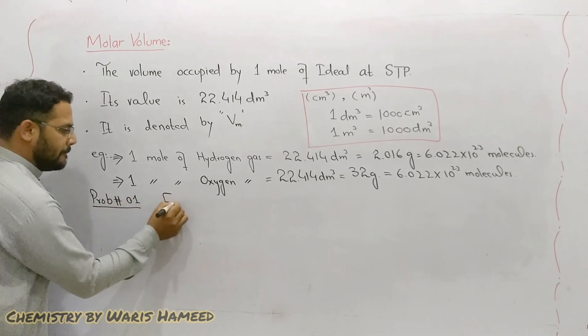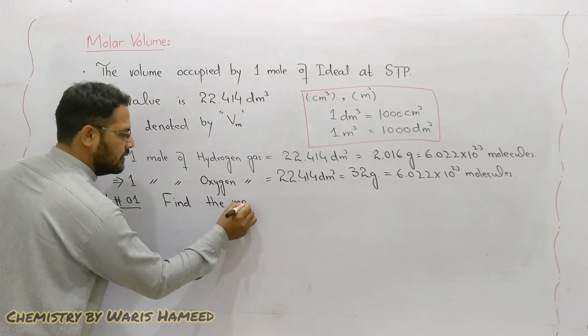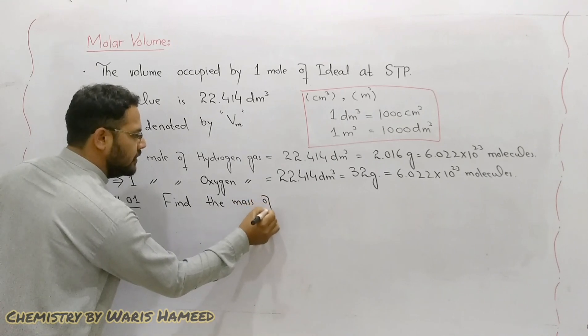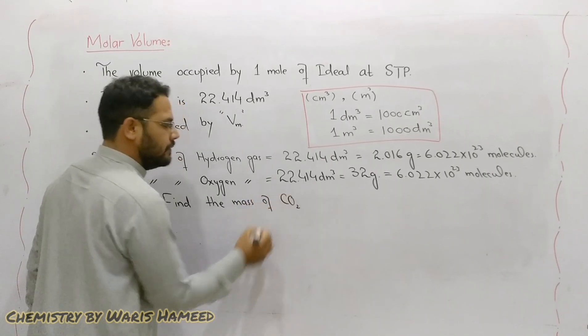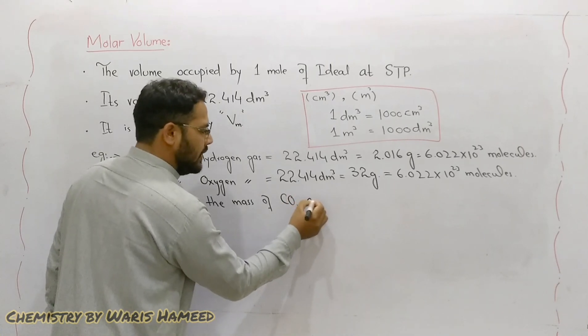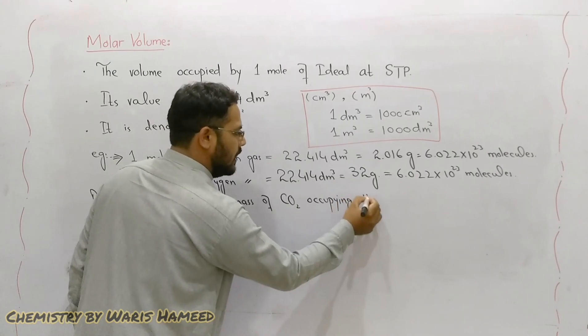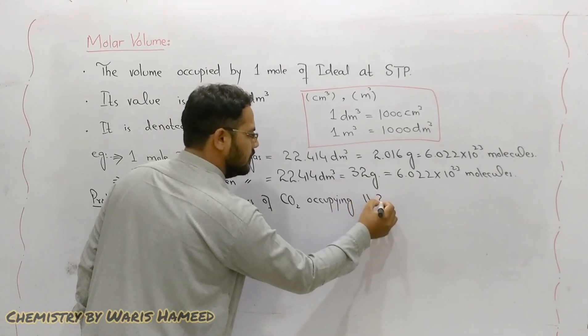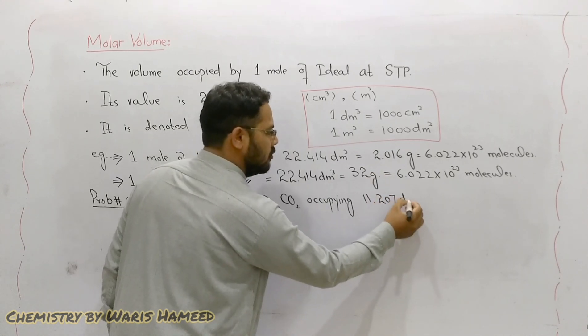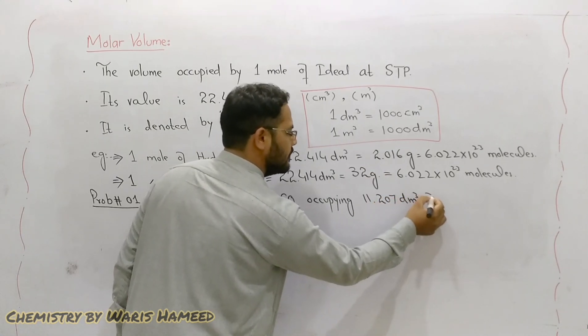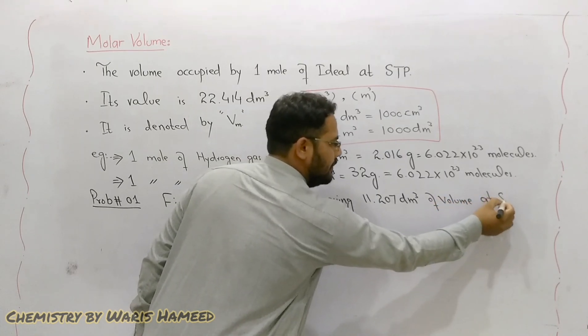Find the mass of CO₂ occupying 11.207 dm³ of volume at STP.